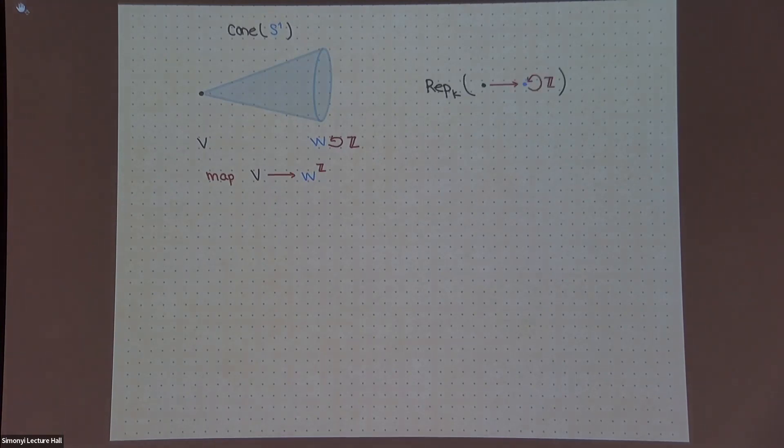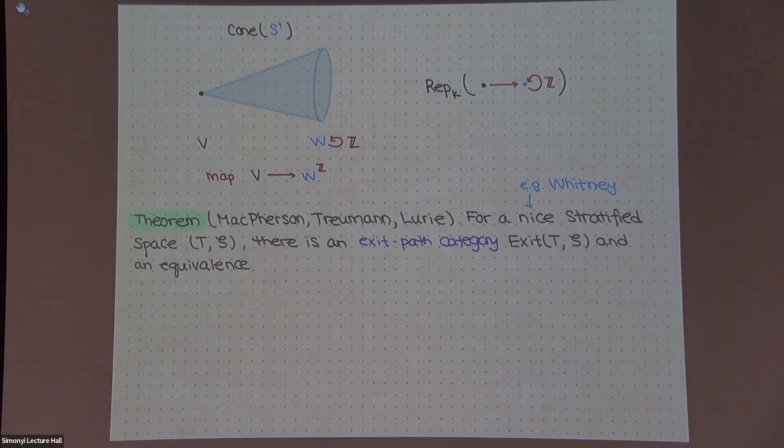So it's also something kind of combinatorial. It's a representation of not exactly a quiver. Maybe it's some quiver with relations that has two objects. One has automorphism Z, one has no automorphisms, and it has a map to the other one so that whenever you act by this Z, you don't do anything different. So it's still somewhat more combinatorial. And well, we suspect at this point that this is an example of more general phenomena. So there's a theorem that goes back to McPherson, and the kind of maximal generalization is due to Lurie.